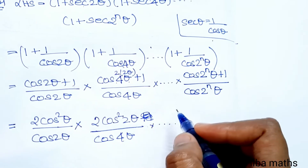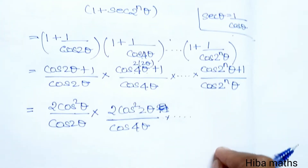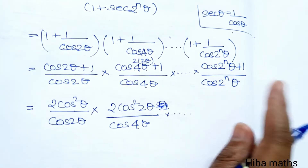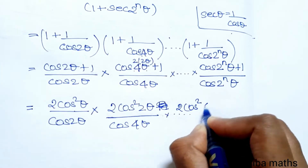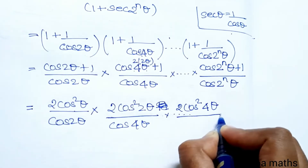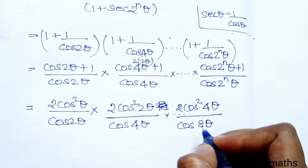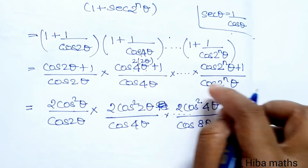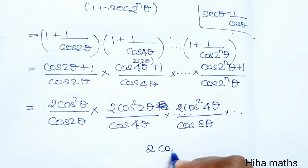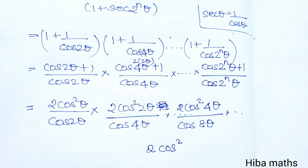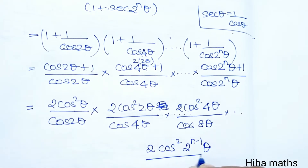Continuing the pattern: the 6th term gives 2³ = 8θ, so 2cos²4θ divided by cos8θ. The general term is 2cos²(2ⁿ⁻¹θ) divided by cos(2ⁿθ).